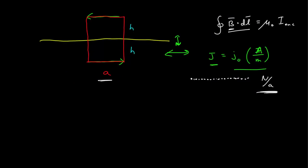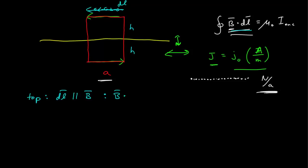Let's compute the line integral for the Amperian loop. Going along the top branch, we take small steps dL in the direction of travel. Along the top, dL is parallel to the magnetic field the entire way. When two vectors are parallel, the dot product is just the product of their magnitudes, giving B dL. Integrating B dL, B must be constant — this point on the top is no different from any other point since the sheet has infinite extent along the x-axis — so B comes out of the integral and we get a contribution of B times A.